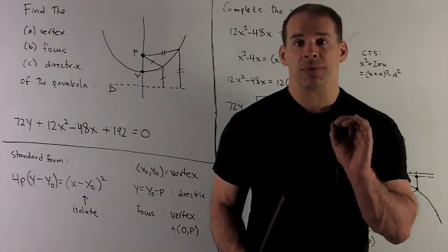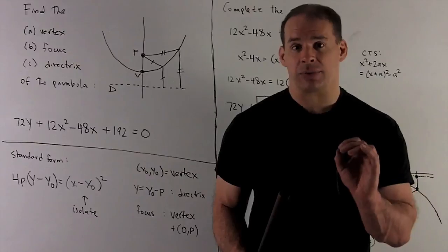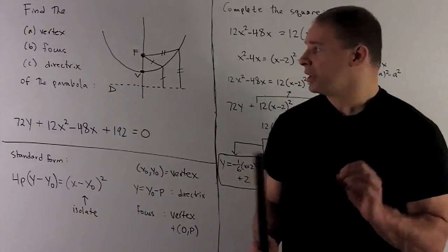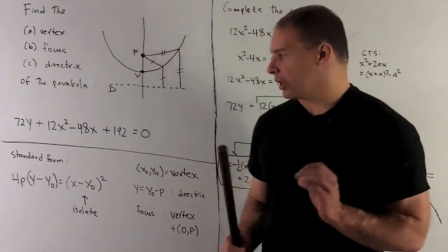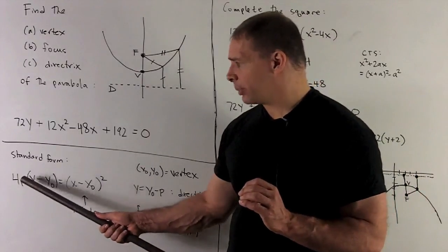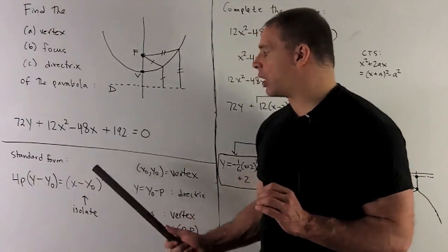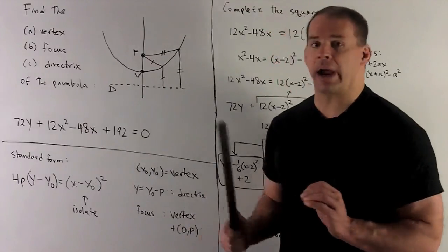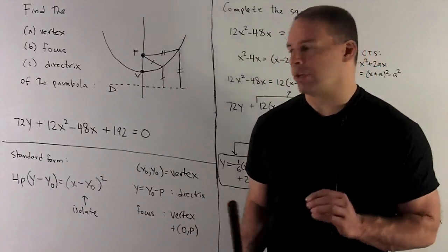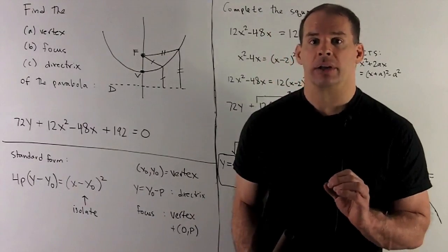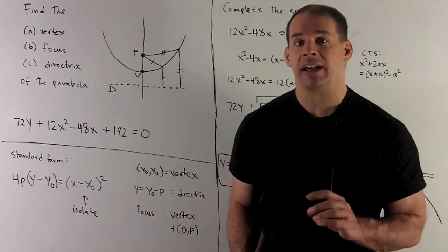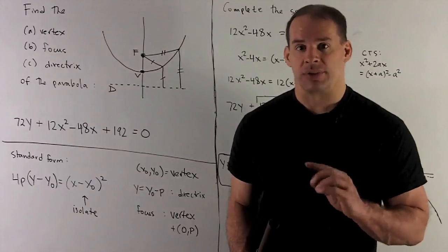What I need to do first is put our parabola in standard form. Since the X has the square, our standard form is going to look like 4P(Y - Y₀) = (X - X₀)². So, our strategy is going to be to isolate the (X - X₀)² term. Push everything off to the other side, and that's how we'll get to each of our items.